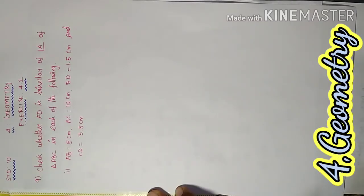Good morning students. Today we're solving 10th standard, Chapter 4 Geometry, Exercise 4.2, Question 9: Check whether AD is the bisector of angle A of triangle ABC. Given: AB equals 5 cm, AC equals